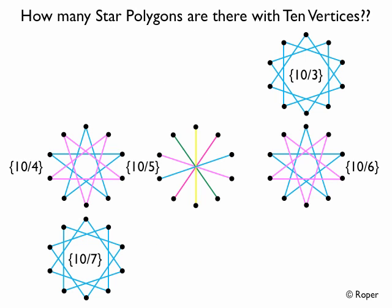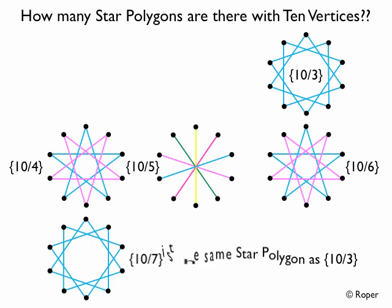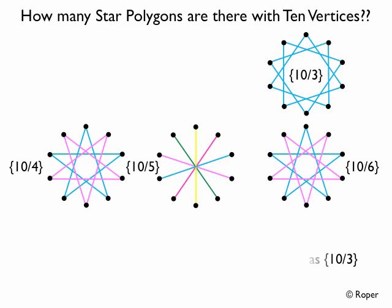Next, let's look at 10,3. 10,3 is a star polygon with 10 vertices. We can tell it's a star polygon because 10 and 3 are relatively prime. The duplicate of 10,3 is 10,7, since 3 plus 7 equals 10. When counting star polygons with a certain number of vertices, we don't count the duplicate — so we count 10,3 but not 10,7. So 10,7 is the same star polygon as 10,3, and we take 10,7 off the board.